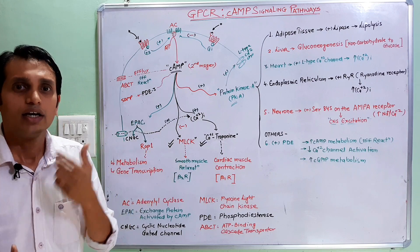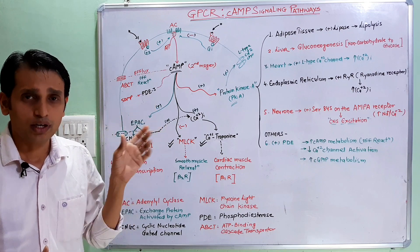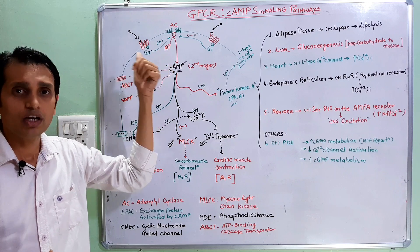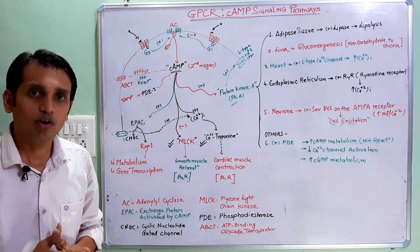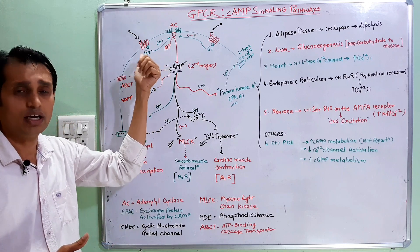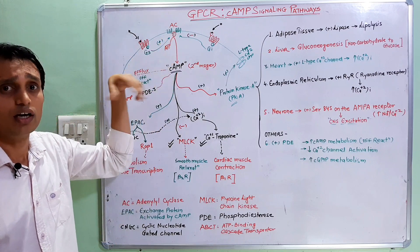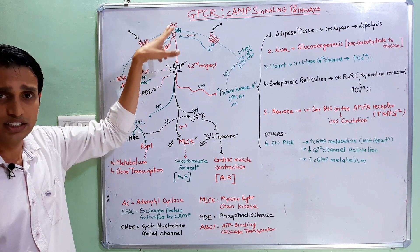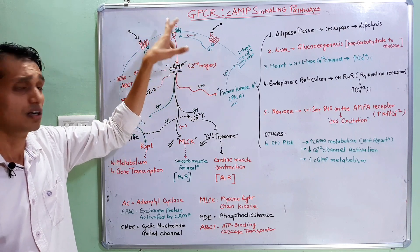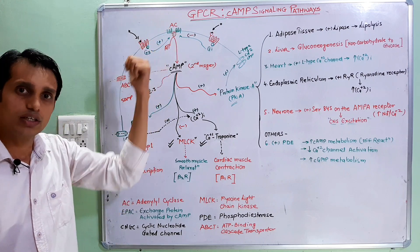In the cyclic AMP pathway, mainly Gs and Gi proteins are involved in the activation or inhibition of AC enzyme. Gs proteins activate the activity of AC enzyme, while Gi proteins inhibit the activity of AC enzyme.